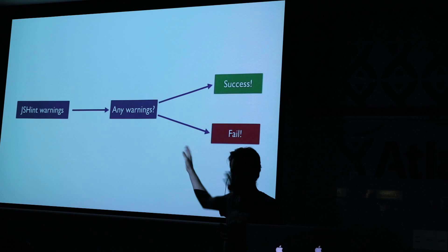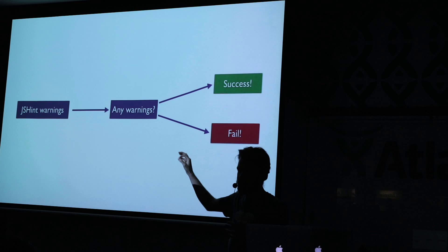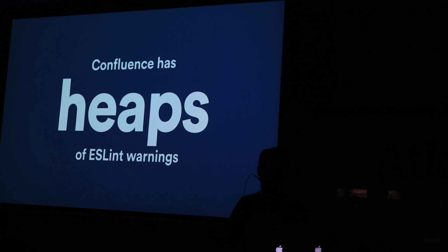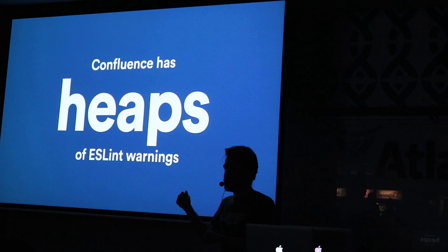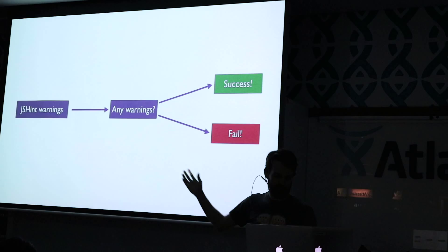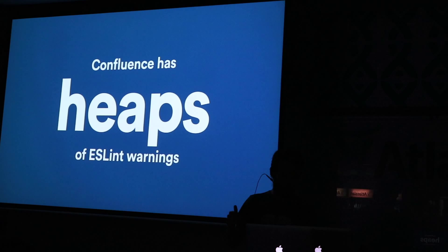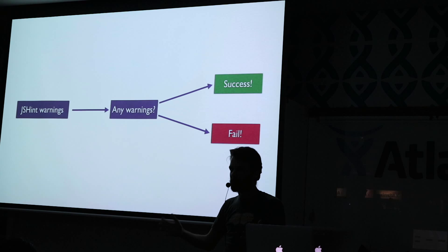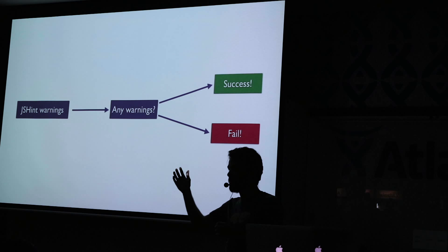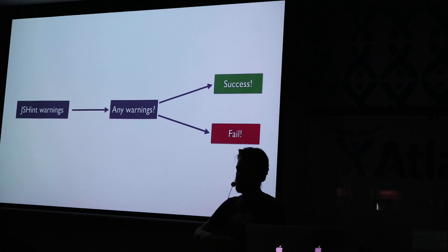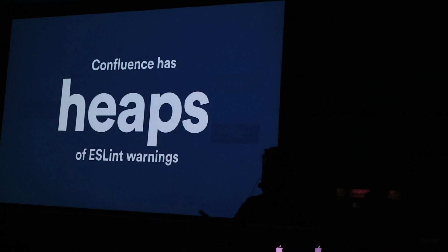What normally happens is you try and get a build going that looks like this — you've got some JSHint warnings or ESLint warnings, whatever it is. You put it in and say: are there any warnings? And if there are, fail the build. Which is great until you have an existing project. Confluence has heaps of warnings. This model just doesn't work when you have a heap of warnings, because you just can't fix them all to make the build go green. So you end up with a red build that nobody looks at, with more warnings piling up.